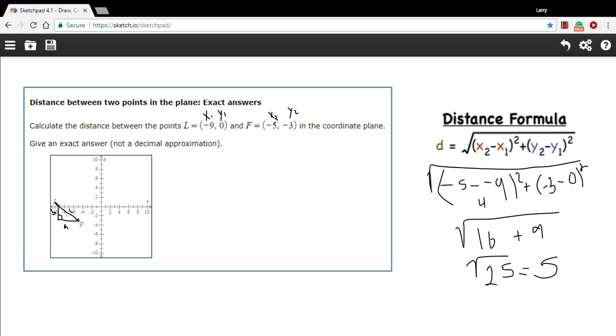So these two points are 5 units apart. So that is how to use the distance formula to determine the distance between two points in the plane.